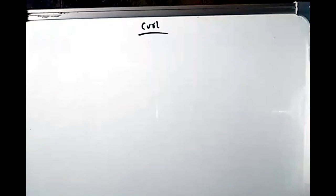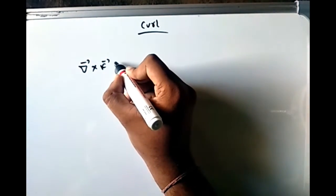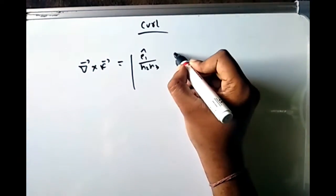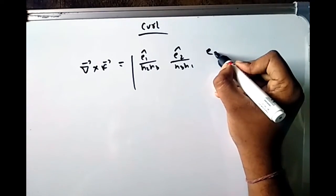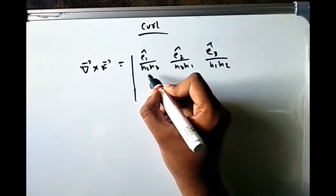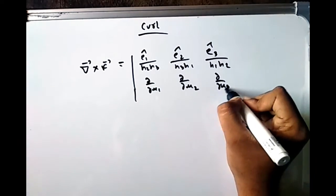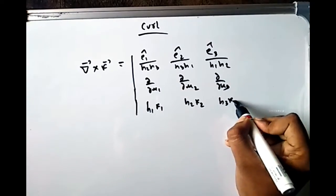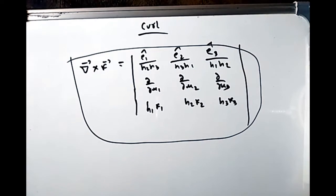The curl is left as an exercise. You can solve it in a similar algebraic way. The result is: curl F = (ê₁/h₂h₃, ê₂/h₃h₁, ê₃/h₁h₂; ∂/∂u₁, ∂/∂u₂, ∂/∂u₃; h₁F₁, h₂F₂, h₃F₃) as a determinant. This can be proven exactly the same way we proved the divergence.